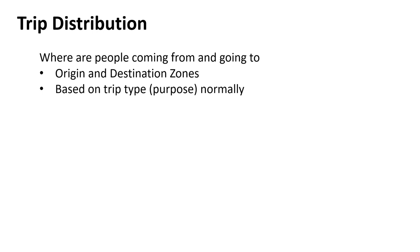The second question is: where are those trips going? Eventually we want to assign travelers to routes and modes — car, bus, or whatever. The book is focused mainly on roads and personal vehicles, though bigger models try to include as many modes as possible. Trip distribution is about where we start from and where we're going — origin and destination zones.